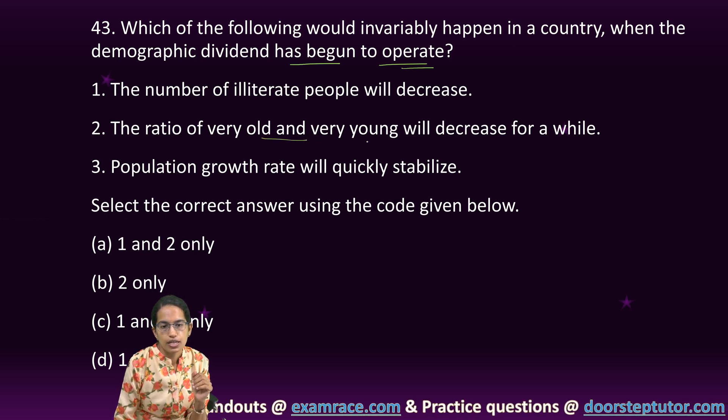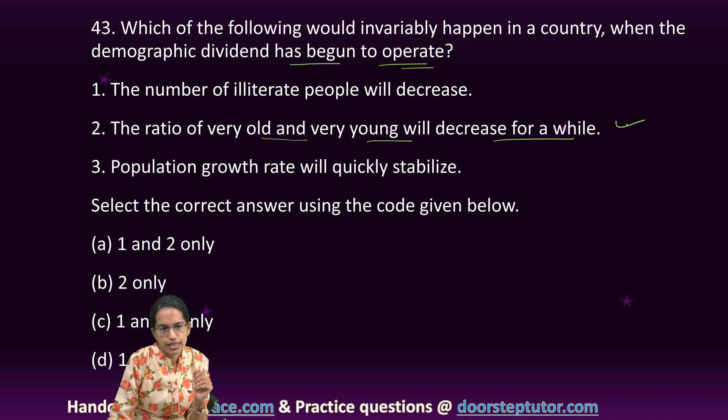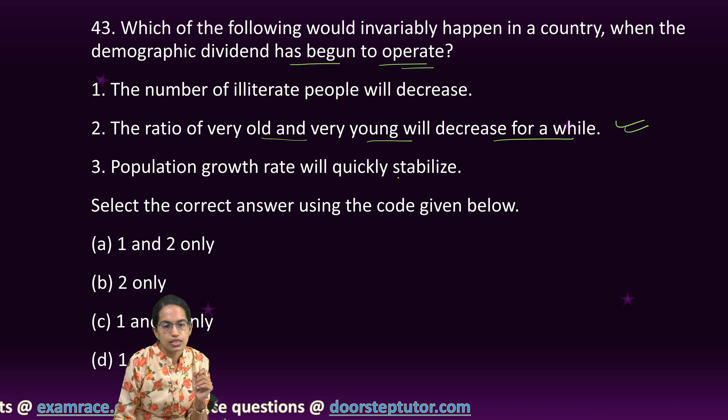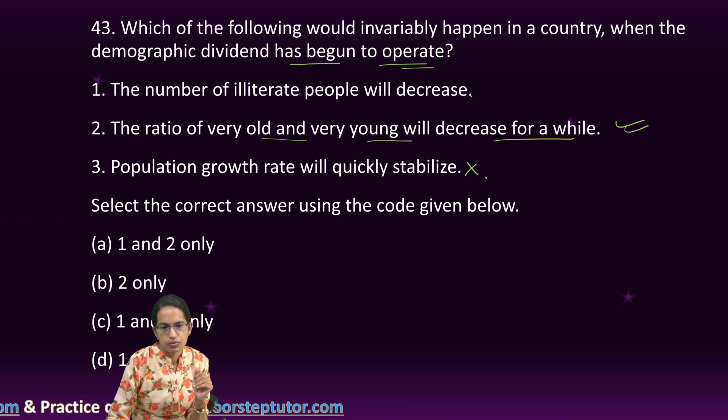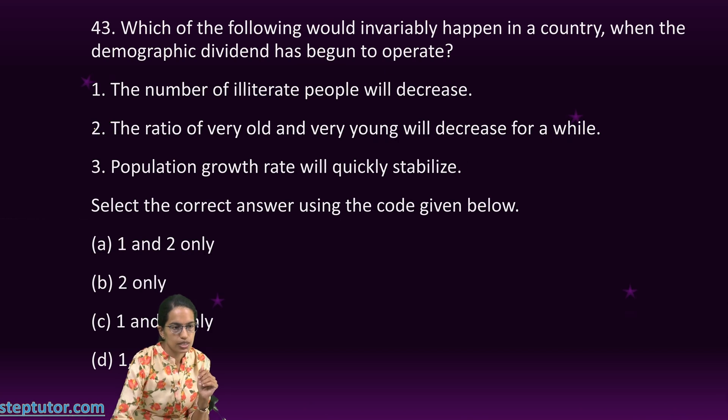Based on this, which of the following would happen in a country when demographic dividend has begun to operate? The ratio of very young and very old would decrease for a while. That's correct. The population rate would stabilize - nothing has been mentioned like that. And the illiterates have not been mentioned. So two is the right option.